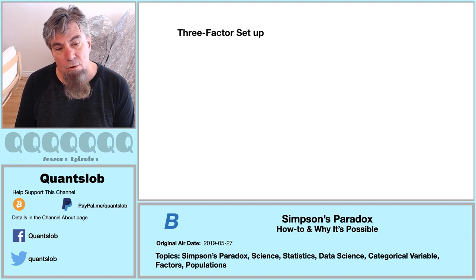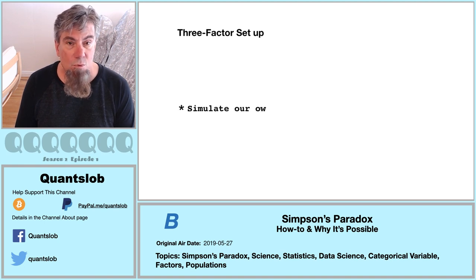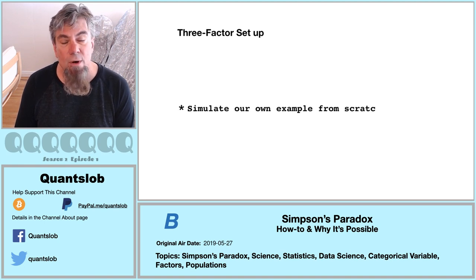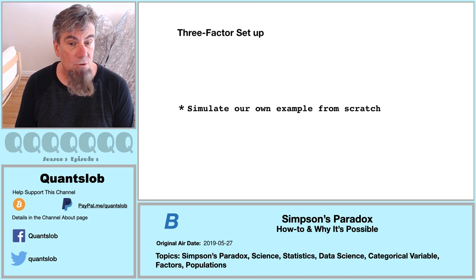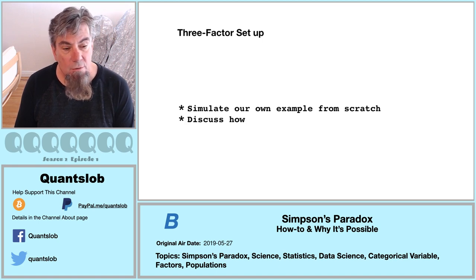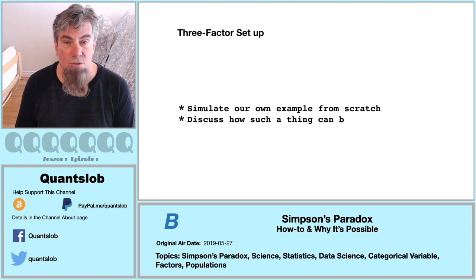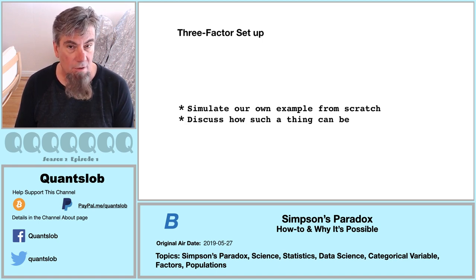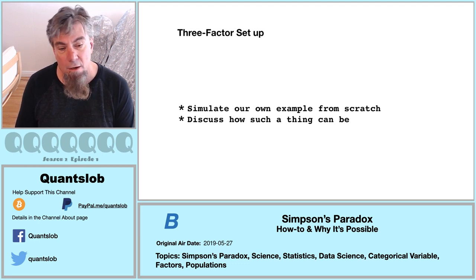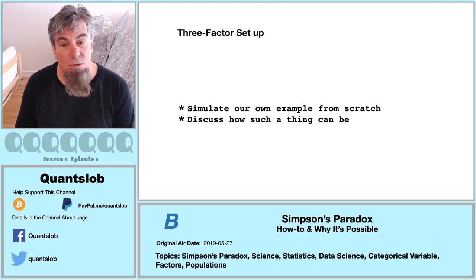Most introductory examples illustrating Simpson's Paradox involve a three-factor setup. What we're going to do here is demonstrate how to fashion an example of a three-factor paradox — in other words, we're going to simulate results to illustrate Simpson's Paradox.